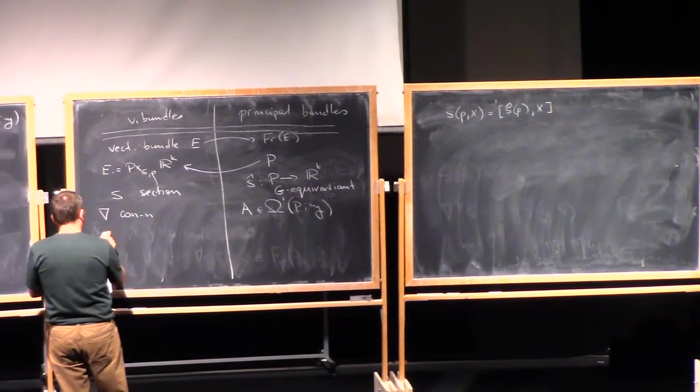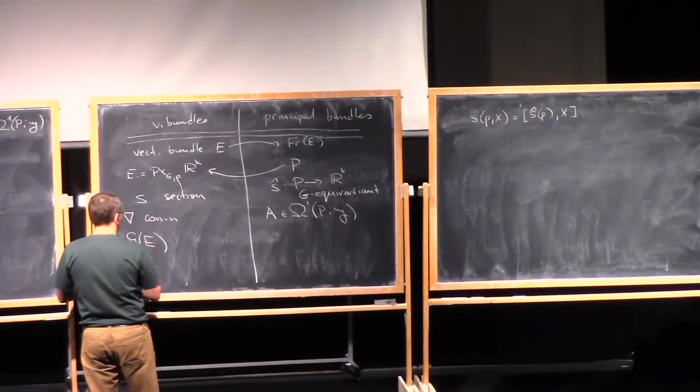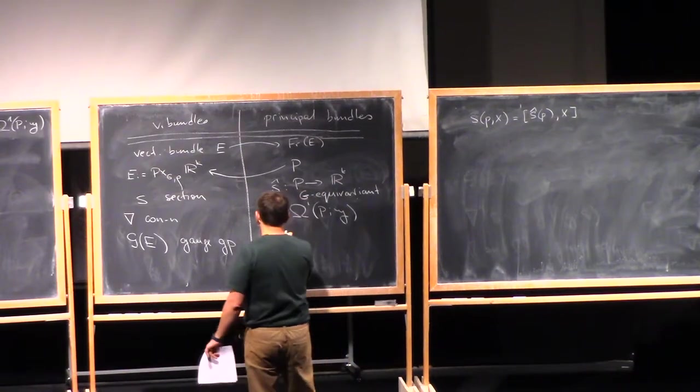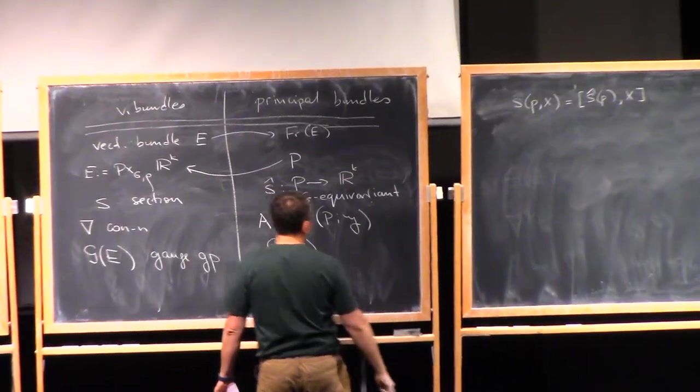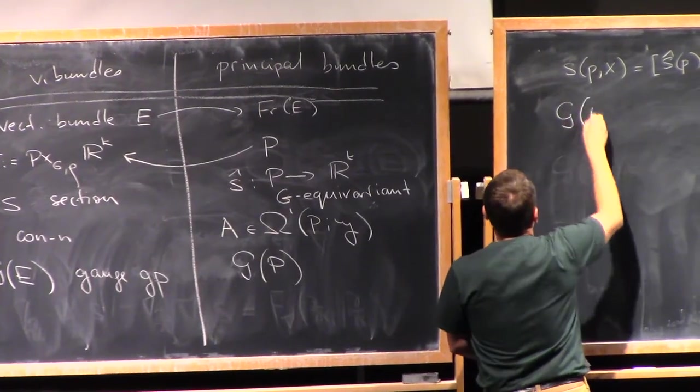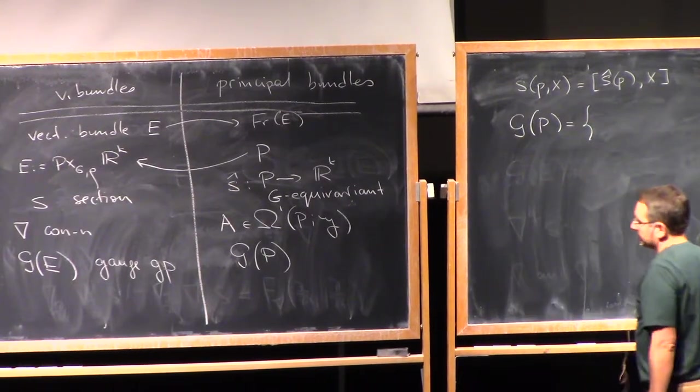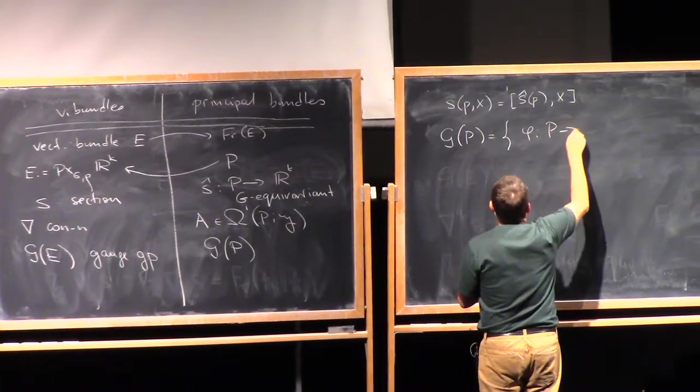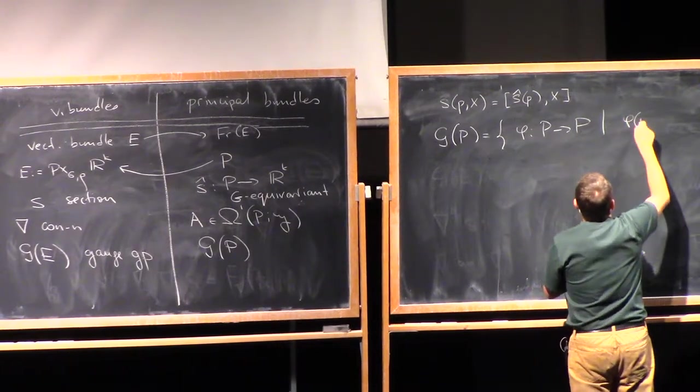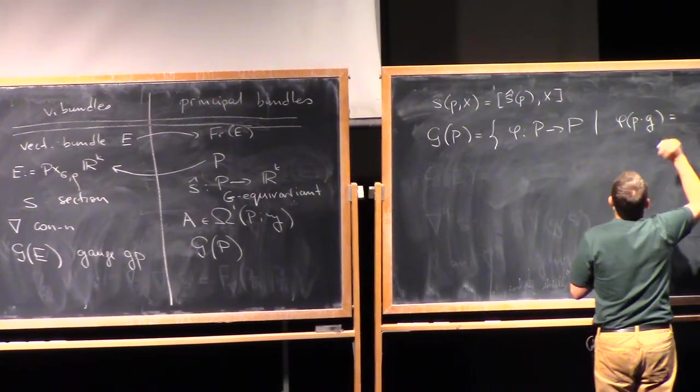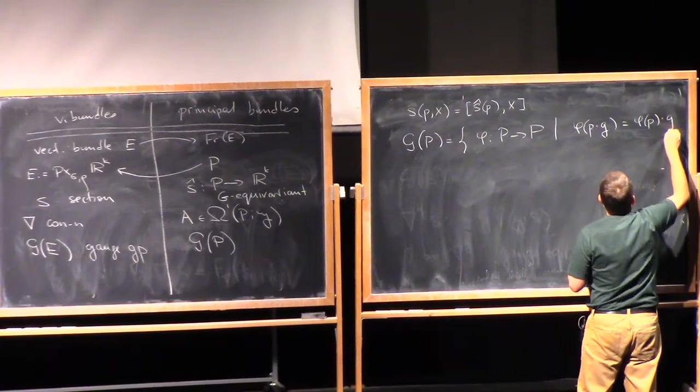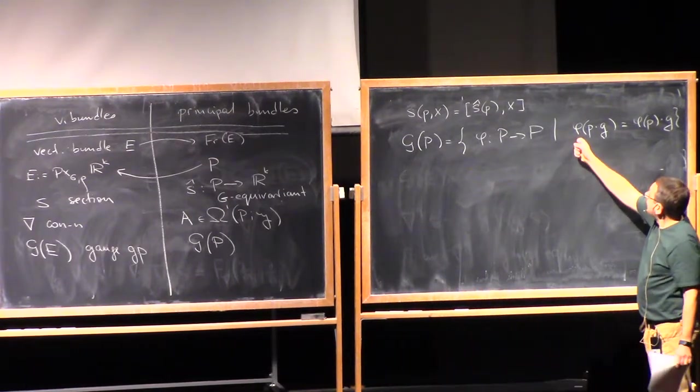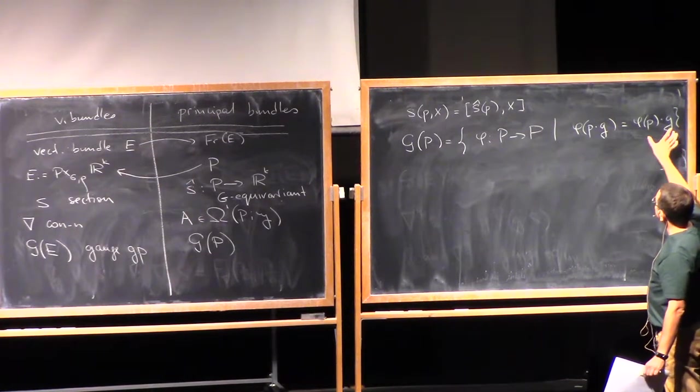And as we discuss here, we have the gauge group of a vector bundle, and we have the corresponding notion of the gauge group on the right-hand side. G of P is just a set of bundle automorphisms. These are the maps from P to P such that phi(p times g) equals phi(p) times g.